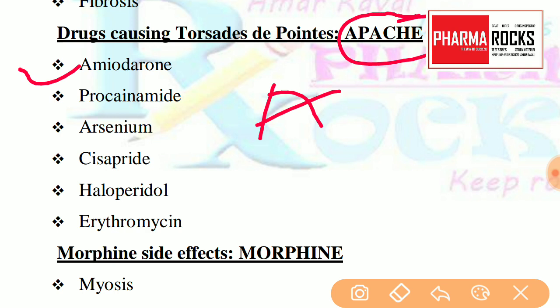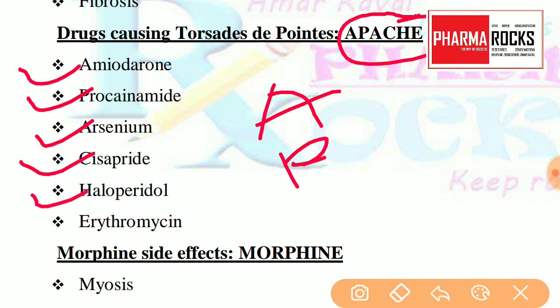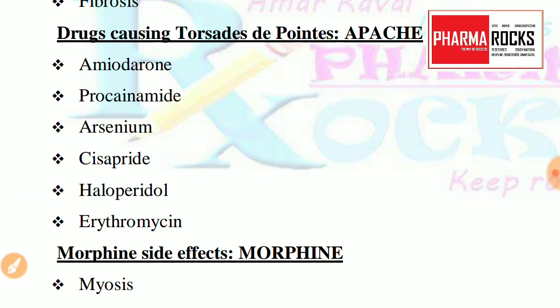So remember: A stands for amiodarone, P stands for procainamide, A stands for arsenic, C stands for cisapride, H stands for haloperidol, and E stands for erythromycin. So these 6 drugs produce Torsades de Pointes — the short form APACHE helps you remember all of them.